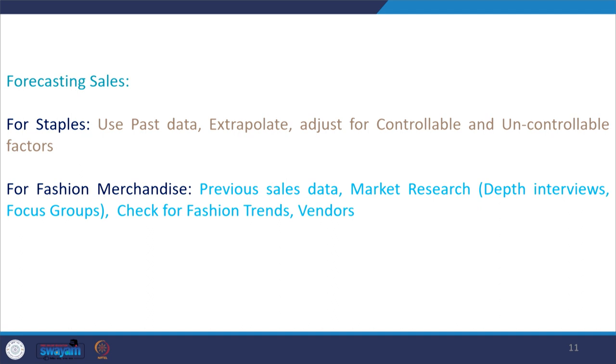New products introduced by competitors — if competitors come up with much better products in a staple category, you might see consumers shifting toward those products. Offers by vendors and promotions by competitors are also going to have an impact on demand.